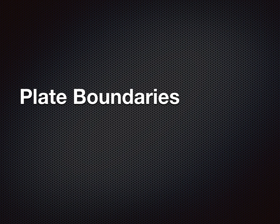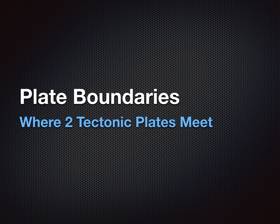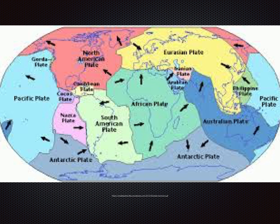The next definition in your notes is plate boundaries, which is the world's easiest definition. It's where two tectonic plates meet. This picture shows the different plates in color. The plates, unlike state maps, are actual boundaries, meaning where one plate ends, another plate begins. So where the two colors meet is a plate boundary, and we'll talk more about the arrows as we go.